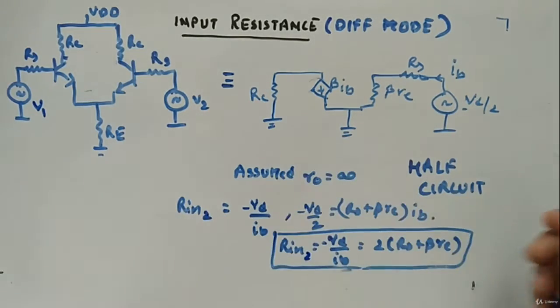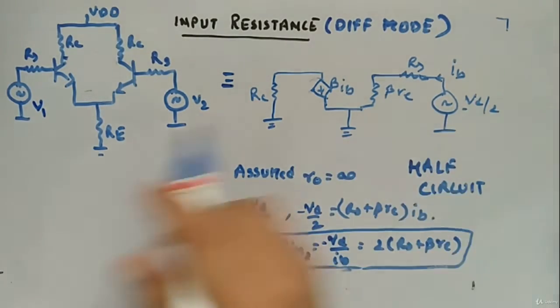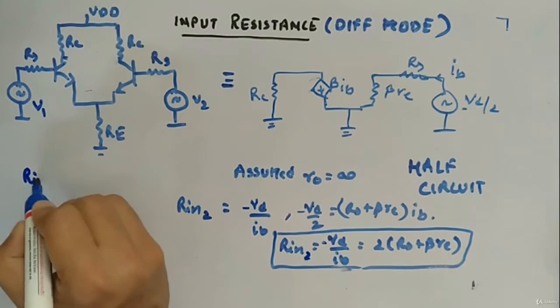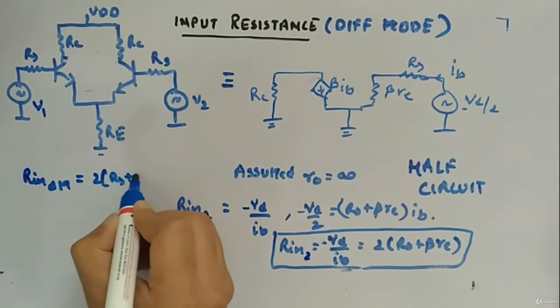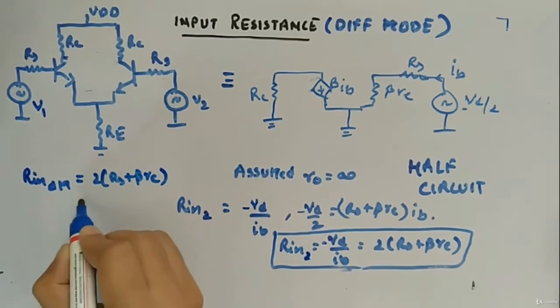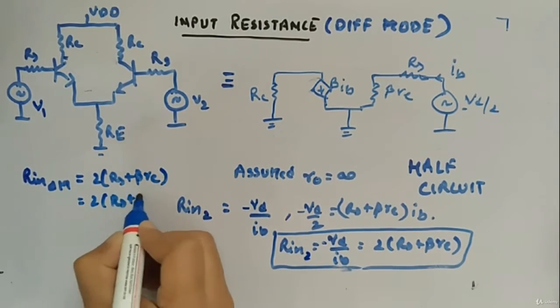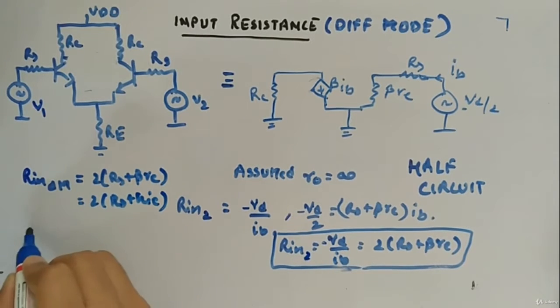will look from this side or this side, in both the cases you will have Rin. I will write differential mode will be 2 Rs plus beta Re, or you can say 2 Rs plus Hi, where